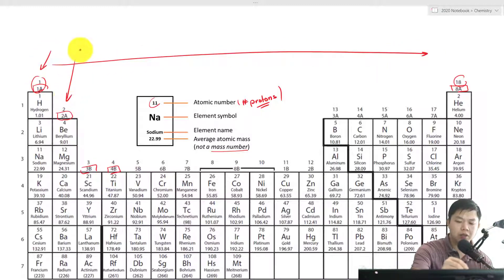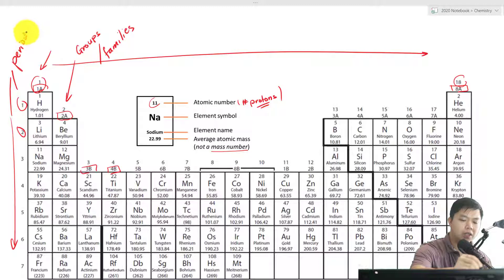Those numbers right here—those are called specific groups. Sometimes they use the term families as well, so don't get tricked by it. And then down here, we have 1 all the way to 7. Those are considered periods. So each element belongs in a specific group as well as a period.